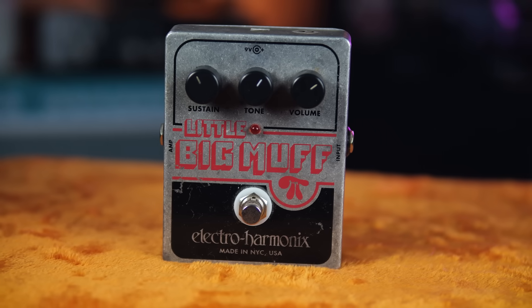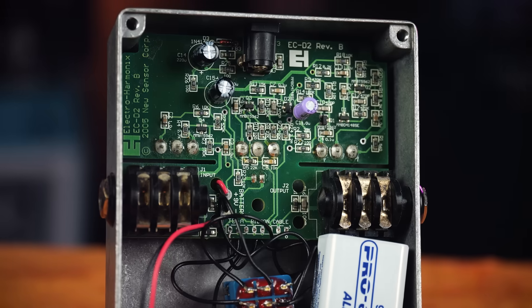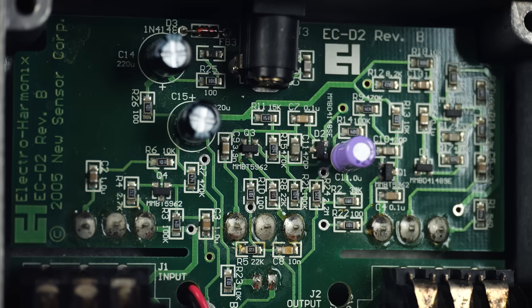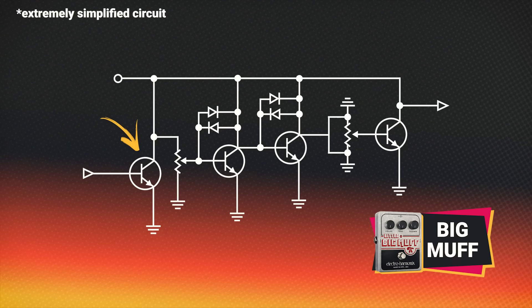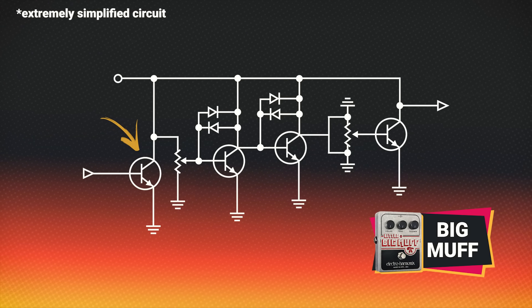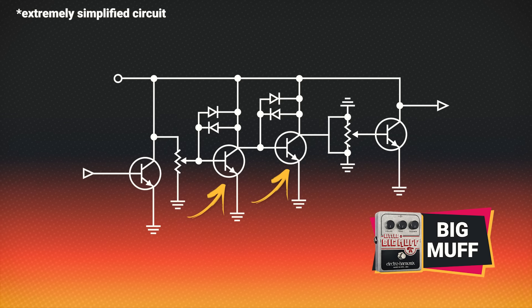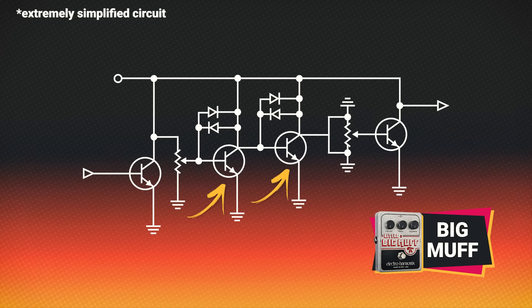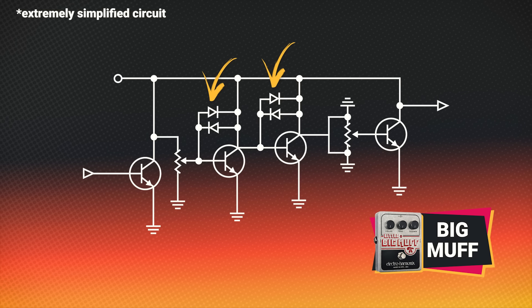The Big Muff builds on the fuzz face to try and achieve a thicker, sustaining distortion sound. It accomplishes this with four transistor gain stages back to back. The first is a boost stage which amplifies the signal level but doesn't contribute significantly to any distortion. Then there are two clipping stages. Each of these uses a single transistor to amplify the signal, and clipping diodes in a soft clipping arrangement to add distortion.